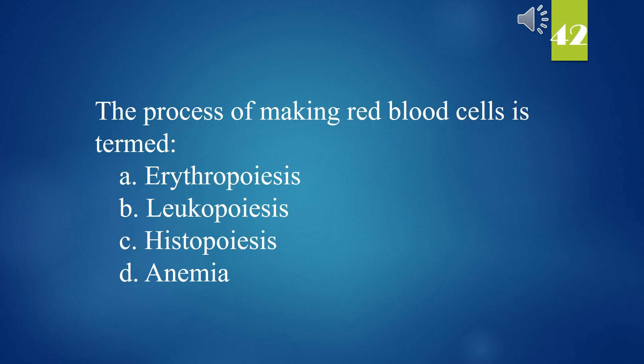The process of making red blood cells is termed: A. Erythropoiesis. B. Leukopoiesis. C. Histopoiesis. D. Anemia. The answer is A. Erythropoiesis.